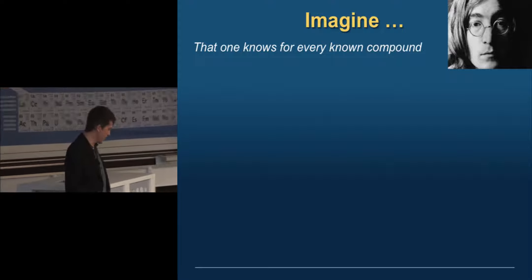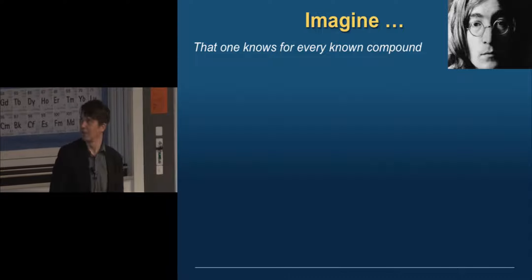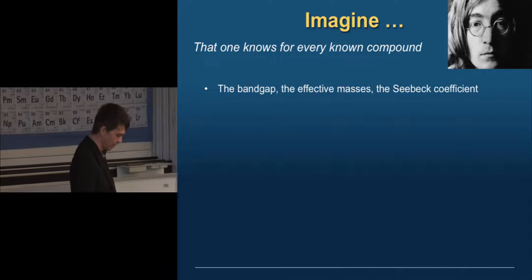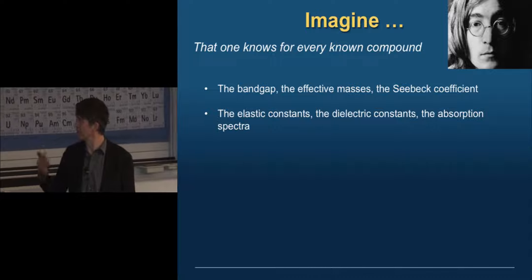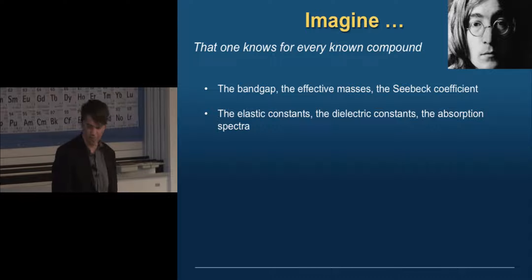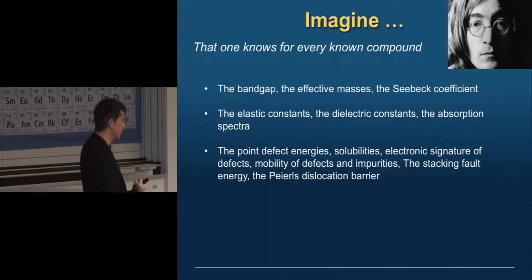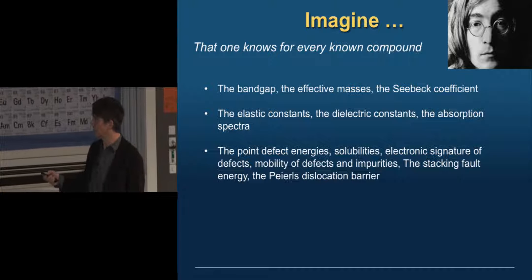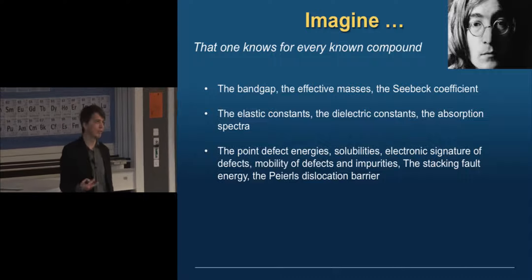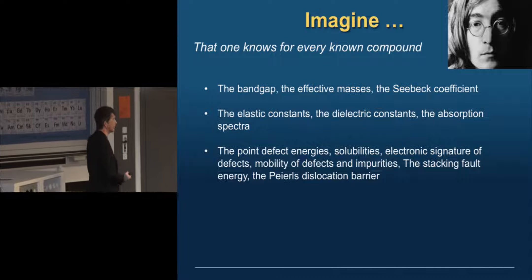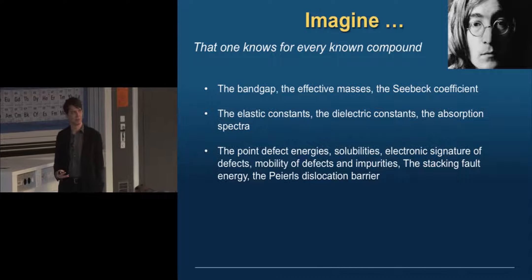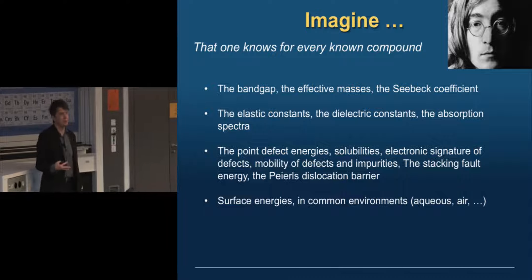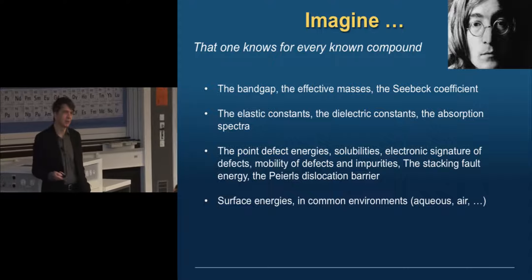Imagine that you actually knew a lot more — that for every compound you knew the band gap, the effective masses, the Seebeck coefficient, all these electronic properties, the elastic constants, the dielectric constants, absorption spectrum. Maybe you also knew the point defect energies, solubilities, the electronic signature of those defects. If you're more into mechanical behavior, you'd want to know the stacking fault energy, the Peierls barrier of dislocations, the solute interaction with a dislocation, the surface energies. Where would materials science be?